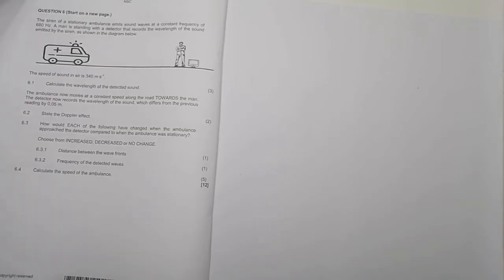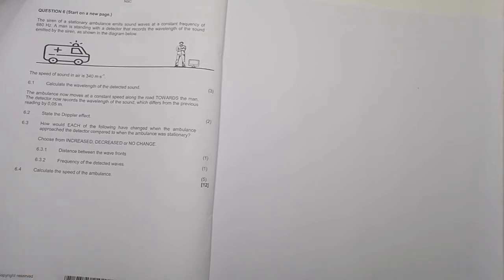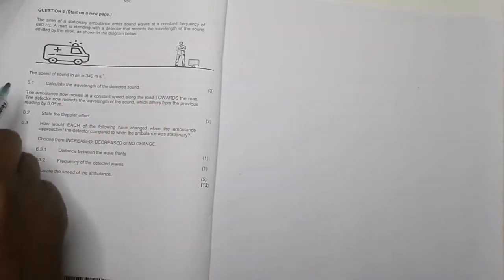Let's quickly have a look at this question on the Doppler effect. They say the siren of a stationary ambulance emits sound waves at a constant frequency of 680 Hz — remember that's the frequency of the source. A man standing with a detector records the wavelength of sound emitted by the siren as shown in the diagram. The speed of sound in air is 340 m/s.